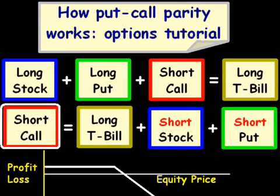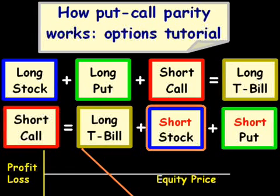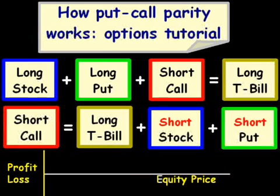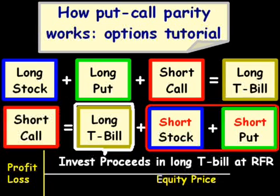So when we look at this, the short call has a profit-loss diagram highlighted in white — we lose more money the more the equity price goes up. A short stock means we lose money when the price goes up and make money when it goes down. A short put, on the other hand, means we make money when the price goes up and lose money when it goes down. So what we're going to do is short the stock, short the put, take those proceeds, and invest them in the long Treasury bill at the risk-free rate of return.